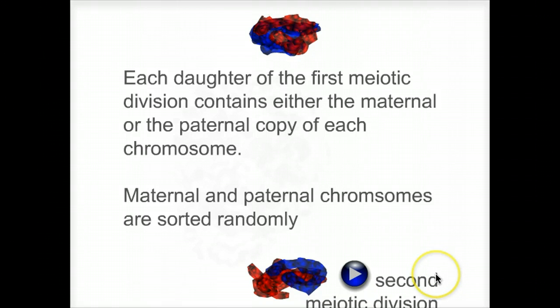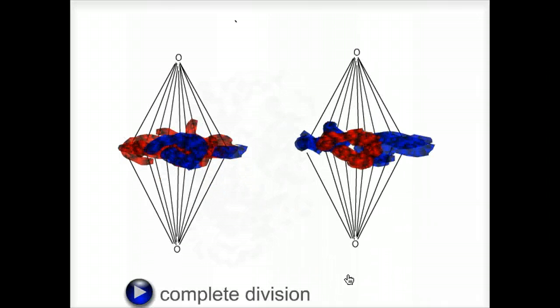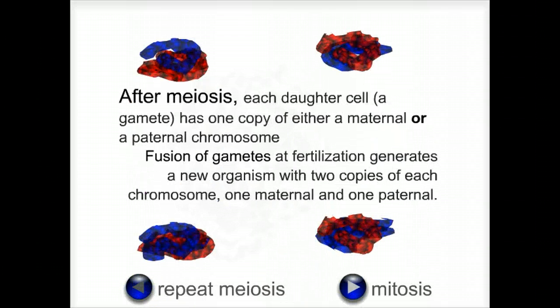Now the cell enters the second meiotic division. This time there is no DNA replication. After meiosis, each daughter cell has one copy of either the maternal or the paternal chromosome. It is haploid — it has a full set of chromosomes, but only one copy of each.